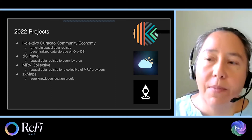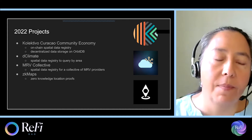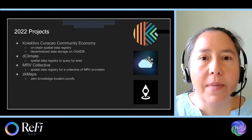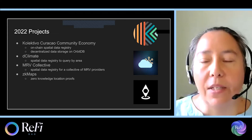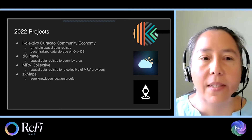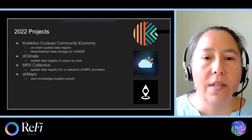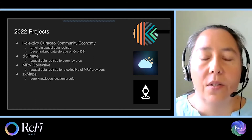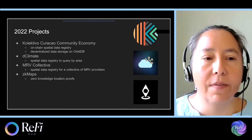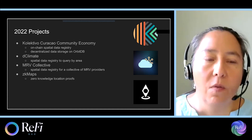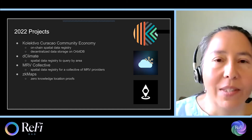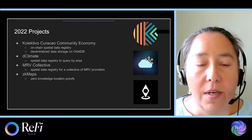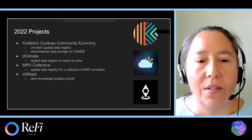We built these projects with four different groups during 2022. Starting with Colectivo Curacao Community Economy, we're building an on-chain spatial data registry and doing decentralized data storage of weather station data on OrbitDB. For Declimate, we built a POC spatial data registry to query by area. We're also extending that work for the MRV Collective, a collective of MRV providers. Finally, we're supporting ZKMAPS and their zero-knowledge location proofs.